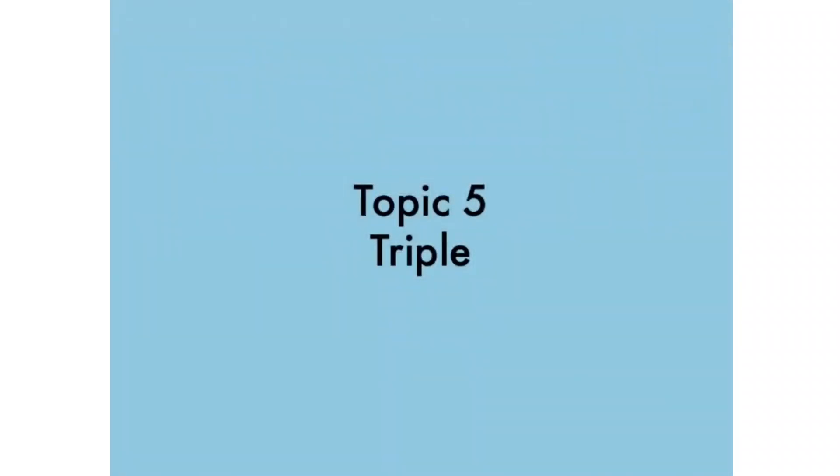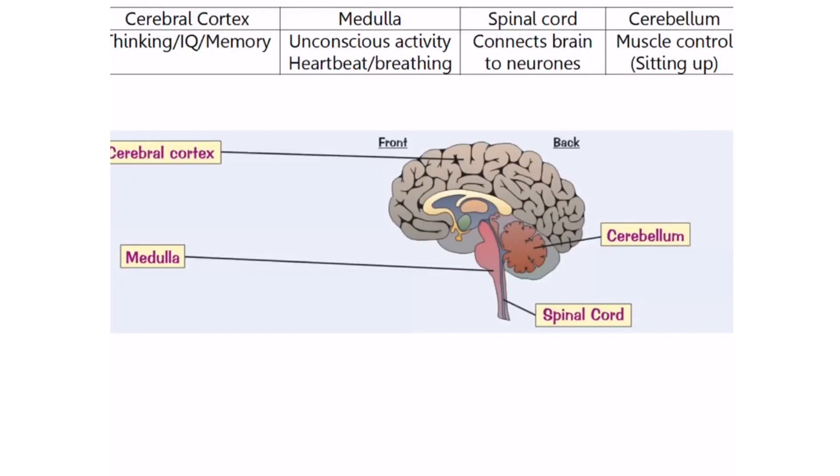Okay, so topic five. This is the only triple content stuff. In the brain you have four main parts: the cerebral cortex, which is this area responsible for thinking, conscious activity, IQ and memory; the medulla, which is this area over here, responsible for unconscious activity such as heartbeat and breathing.